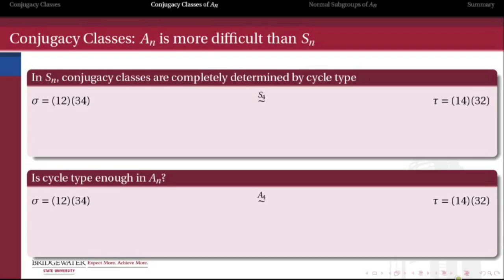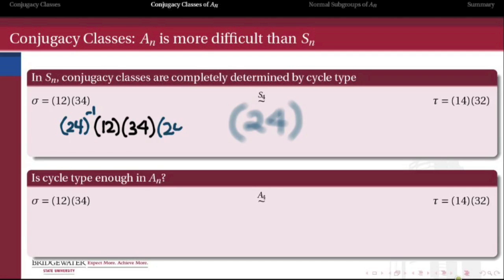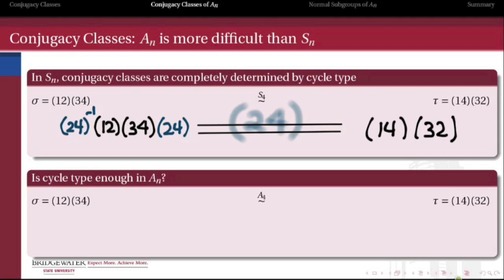An is a little more difficult than Sn, because the conjugacy class is not completely determined by cycle type anymore. Recall that in S4, the 2+2 cycle (1 2 3 4) and the 2+2 cycle (1 4 3 2) — we showed directly these are conjugate through the element (2 4). Just by swapping 2 with 4, we achieve the relabeling that we need to turn sigma into tau.